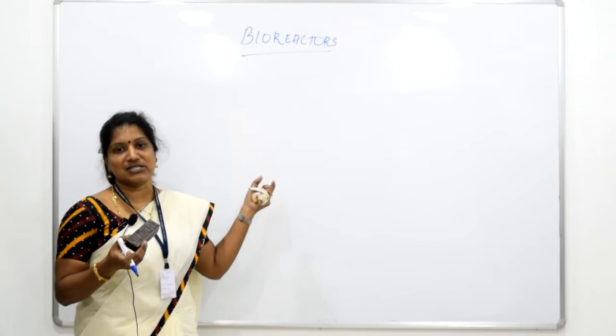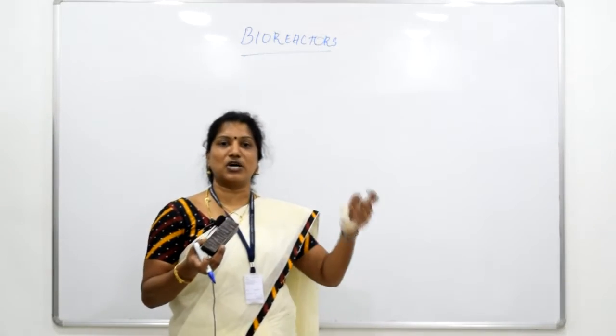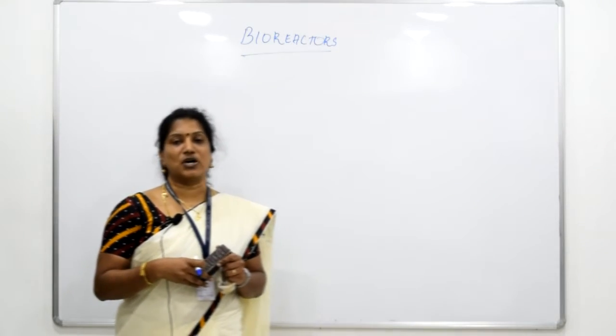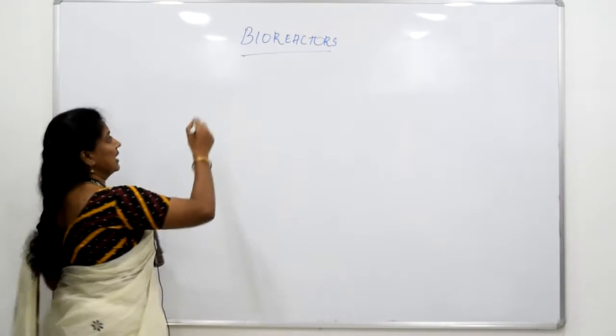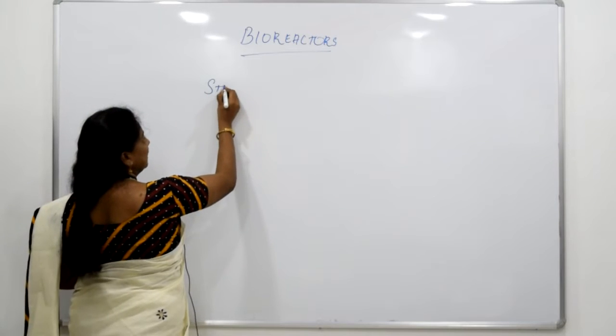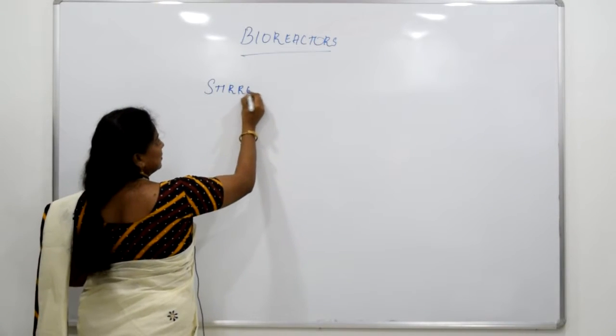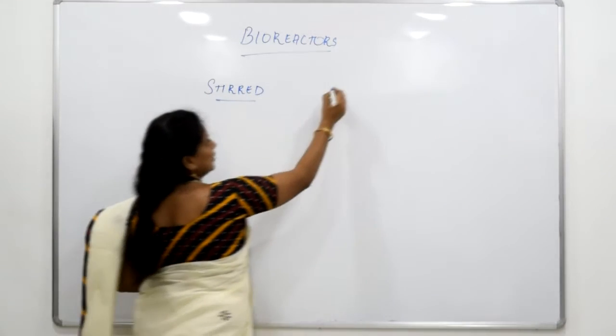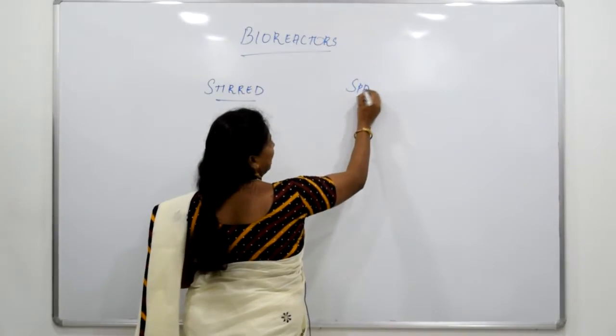These bioreactors are the devices which we are using for the production of biotechnological products. We have two types of bioreactors basically: stirred type of bioreactors and the other one is sparger type of bioreactors.